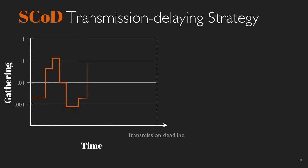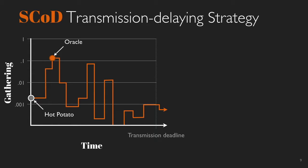SCOD works as follows: each antenna measures the ratio of users gathered within a cell over the total number of users interested in the same content. The antenna runs this measurement until the transmission deadline is reached. Once the content is available, SCOD starts comparing the user gathering ratio against a function that decreases monotonically. The hot potato strategy triggers a transmission as soon as the content is available, at instant 0. The Oracle takes the highest ratio over the time period preceding the transmission deadline. In the case of SCOD, the transmission occurs when the ratio is equal to or greater than the reference value given by the decision function.